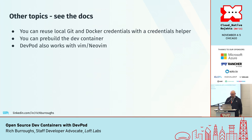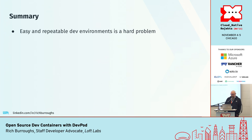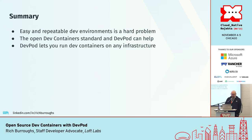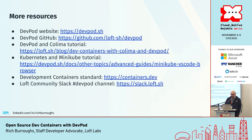To summarize: easy and repeatable dev environments have been a problem since the beginning of time. The open dev container standard and DevPod can help. DevPod lets you run dev containers on any infrastructure. Key resources: the DevPod website is devpod.sh, there's a GitHub repo, a Colima tutorial I demoed today, docs on using Kubernetes and Minikube, the dev container standard at containers.dev, and a Loft community Slack with a DevPod channel where maintainers and advanced users can help.